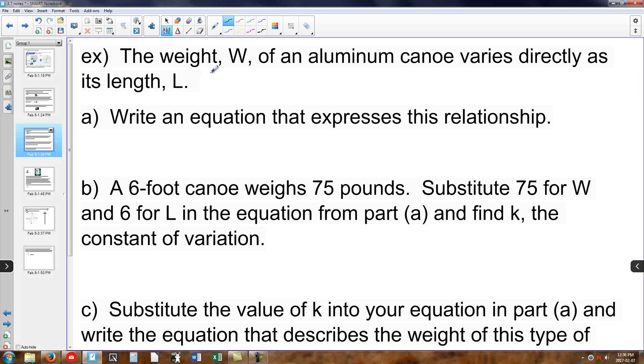Now we have a canoe that's being produced. And we're told that its weight of the aluminum canoe varies directly as its length, meaning that w equals kl. This is great. We still don't know k. So we go to part B, where we were given k last time. It says a 6-foot canoe weighs 75 pounds. Well, 6 and 75, which one's k? The answer is neither, because 75 is the w, or weight, and 6 is the length, or l. Well, meaning that I actually have 75 equals k times 6.